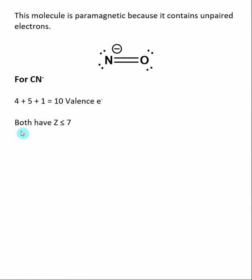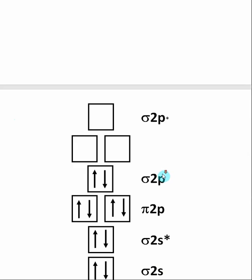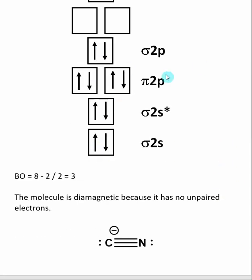For CN⁻, both elements have Z values less than or equal to 7, so the sigma 2P molecular orbital will be higher in energy. Carbon has 4 valence electrons, nitrogen has 5, and we add one electron for the negative charge, giving CN⁻ a total of 10 valence electrons. We place those 10 valence electrons into the molecular orbital diagram and calculate the bond order: 8 electrons in bonding molecular orbitals minus 2 electrons in antibonding molecular orbitals, divided by 2, gives a bond order of 3. This matches the Lewis structure in which carbon and nitrogen share a triple bond. CN⁻ is expected to be diamagnetic because there are no unpaired electrons.